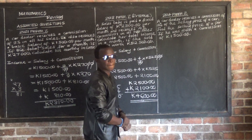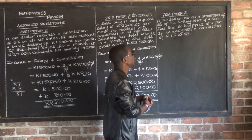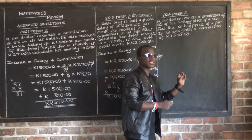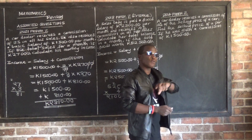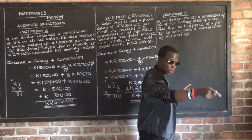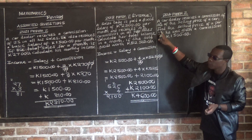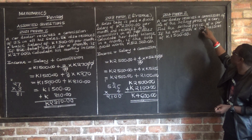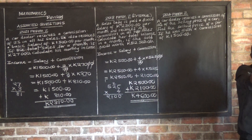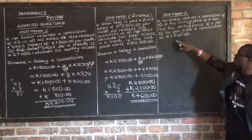Now let's look at the 2014 question. A car dealer receives a commission of 3% of the selling price of a car. The question says: find the selling price of a car if he was given a commission of $1,500. We need to find the selling price — let's call it X.